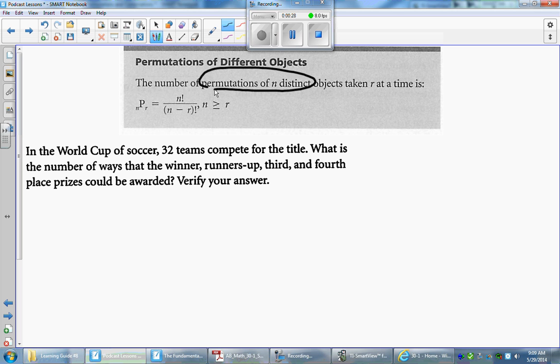And if we're taking it r at a time where r represents a natural number, then the given formula for the number of arrangements here is nPr or n permute r is equal to n factorial over n minus r factorial, where n has to be greater than or equal to r.